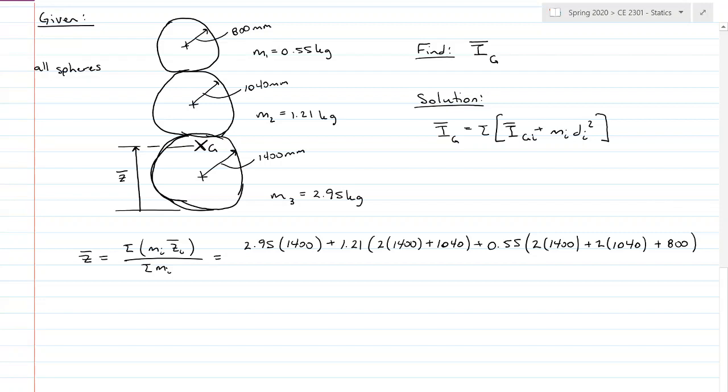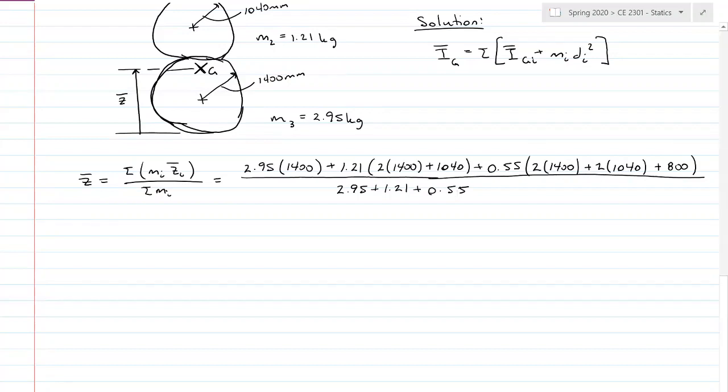All divided by the sum of the masses: 2.95 plus 1.21 plus 0.55. And my math tells me that from the bottom, the mass center is located at 2,526.6 millimeters. So that is my Z bar, 2,526.6 millimeters.